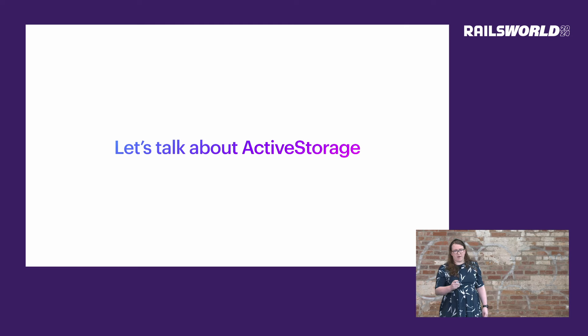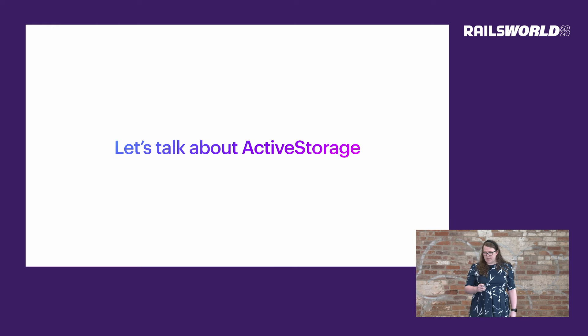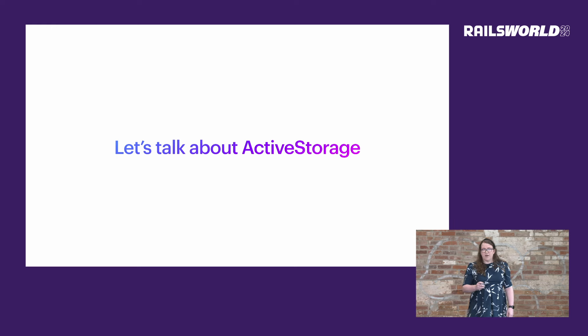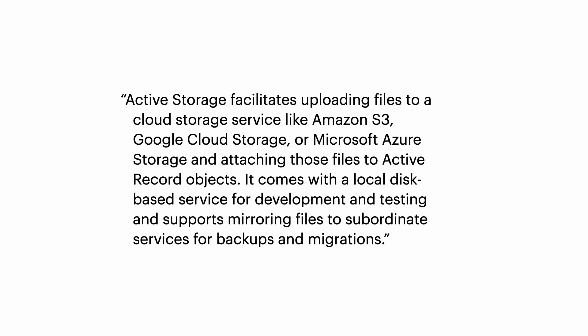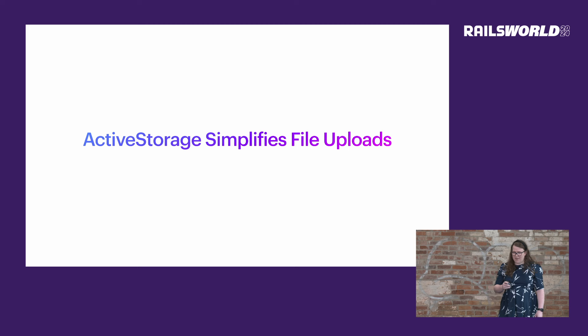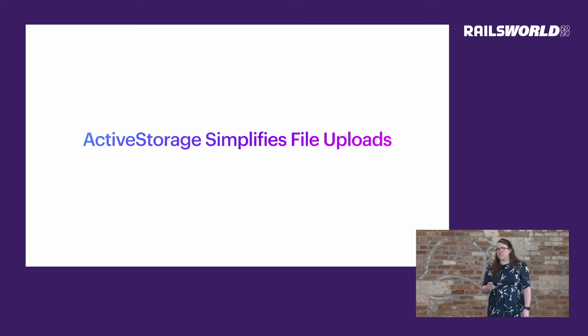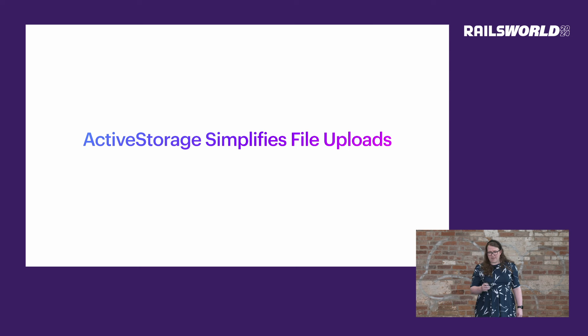First, let's talk about Active Storage. According to the Rails guides, Active Storage facilitates uploading files to a cloud storage service like Amazon S3, Google Cloud Storage, Microsoft Azure Storage, and attaching files to Active Record objects. It comes with a local disk-based service for development and testing and supports mirroring and subordinate services for backups and migrations. Put simply, Active Storage simplifies file uploads by extracting the complexity of working with different cloud storage providers while also supporting local file storage for development and testing environments.